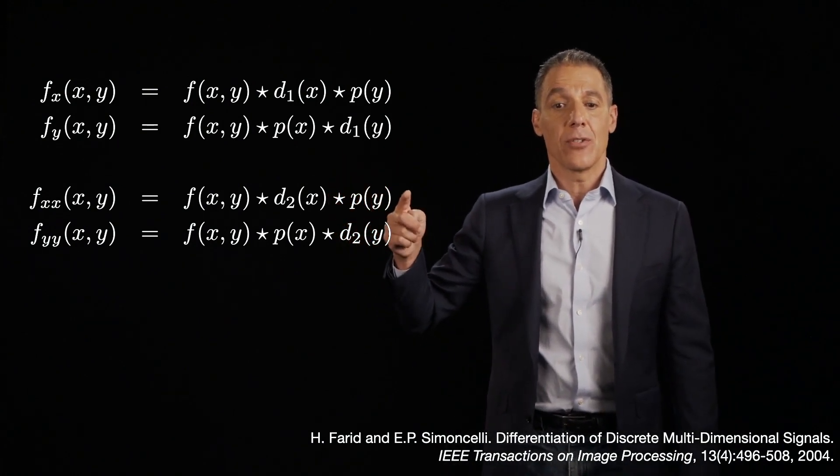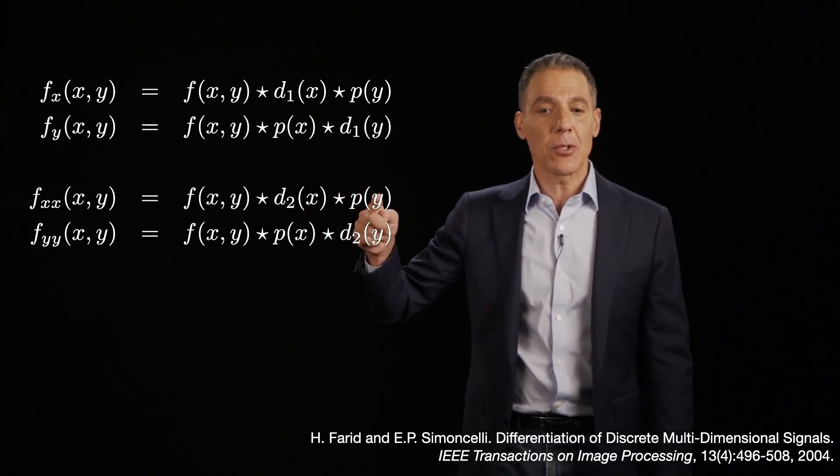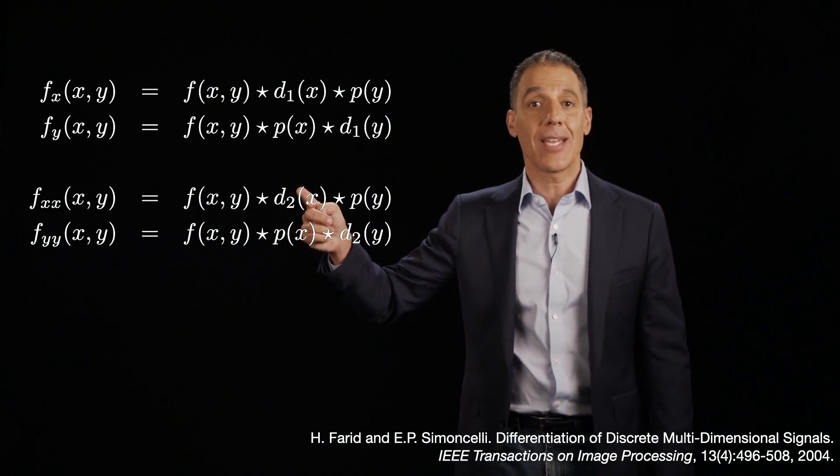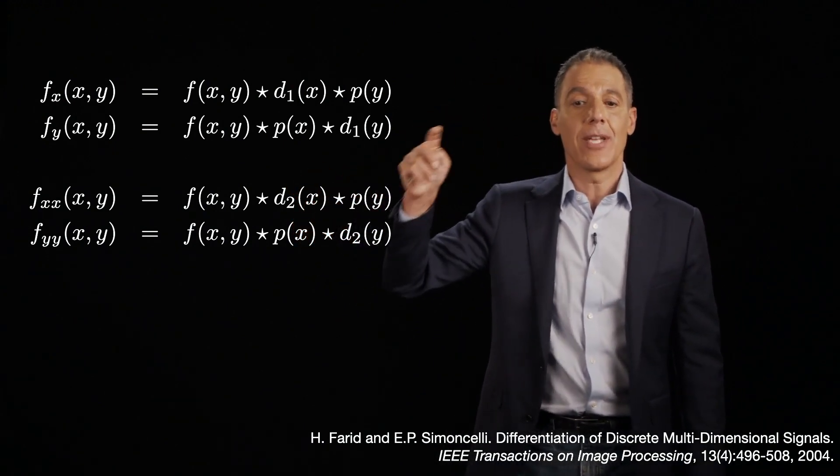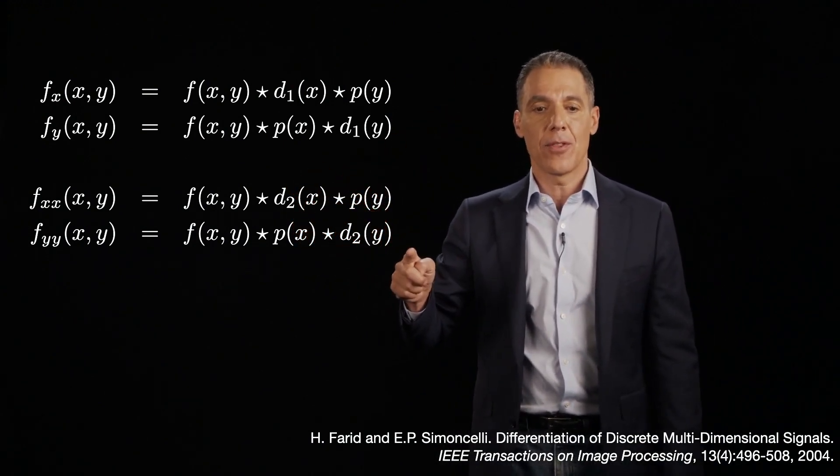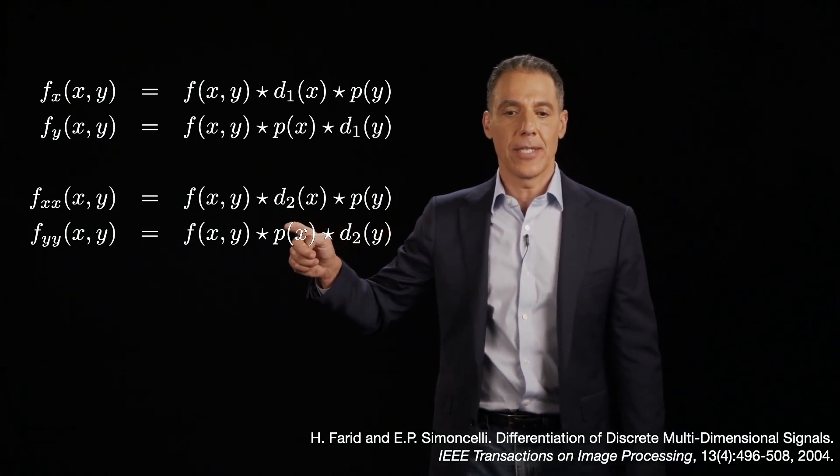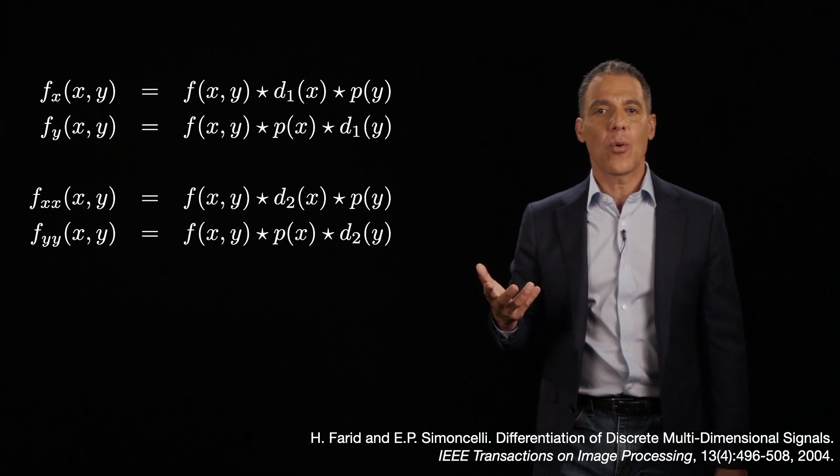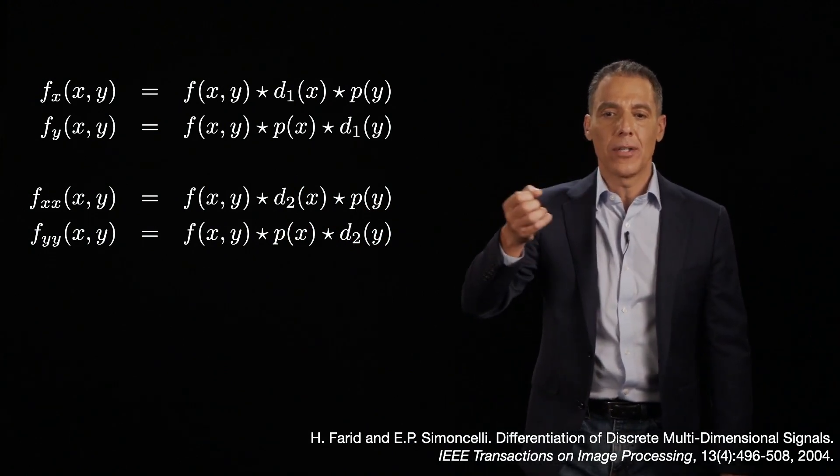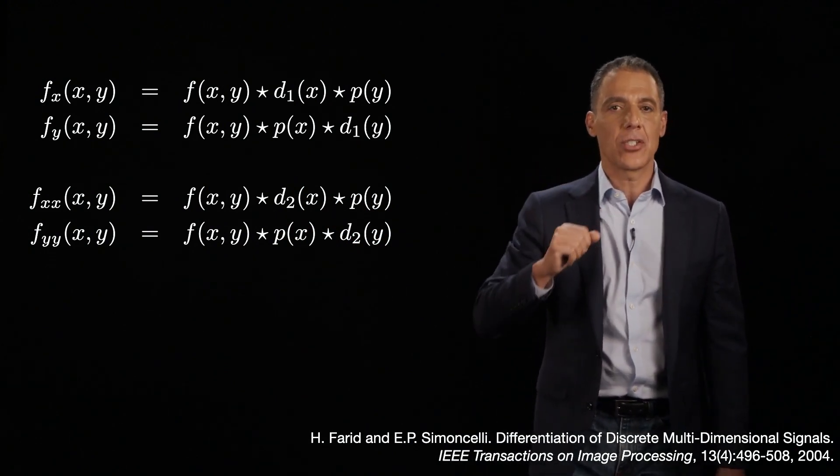Second derivative, you use the same pre-filter, a similar pre-filter, rather, and then you differentiate the second derivative filter in the x direction. And then for the second derivative in the y, differentiate in y, pre-filter in x. And so now the question is, well, what are these D1, P, and D2 filters?